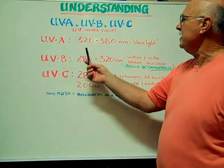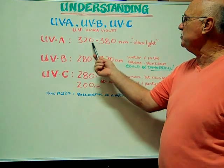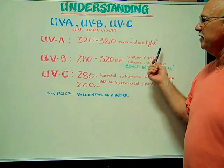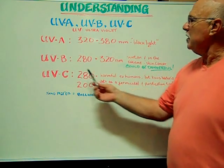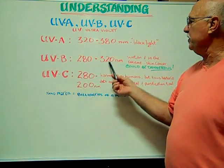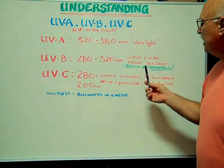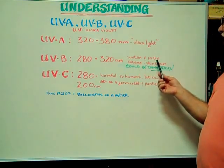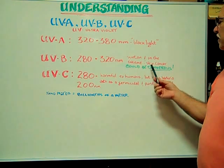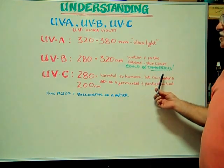UVA is in the spectrum of 320 to 380 nanometers, or in the black light area. UVB is 280 to 320 nanometers — that is in regards to suntanning and in the extreme area can cause skin cancer. It could be dangerous.